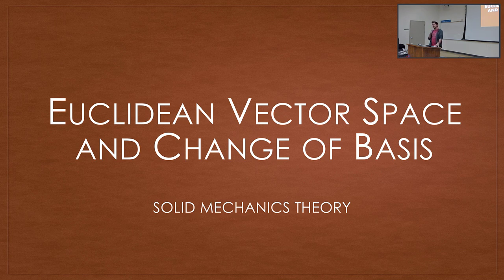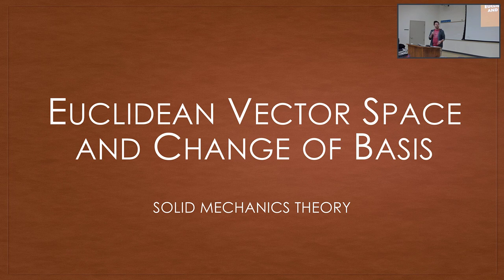The nice part about today is I would say 90% of the material you guys have seen before in N-130 — cross product, dot product — it should be very familiar. I'm going to include some words like Euclidean, which might scare you off, but it really means nothing. Everything we do in engineering in that XYZ coordinate system is a Euclidean vector space — something you may not have heard of, but you've definitely seen before.